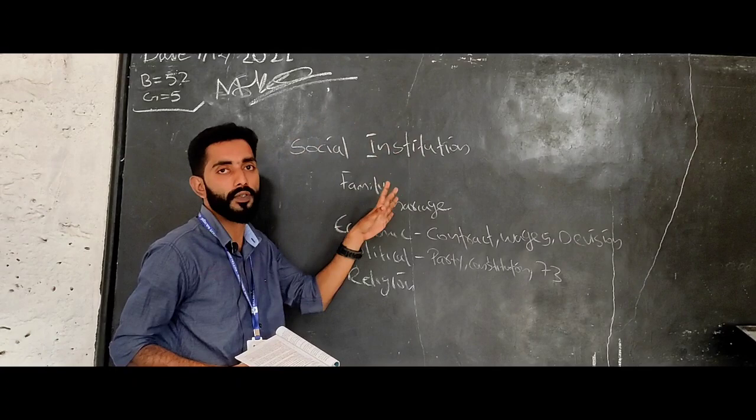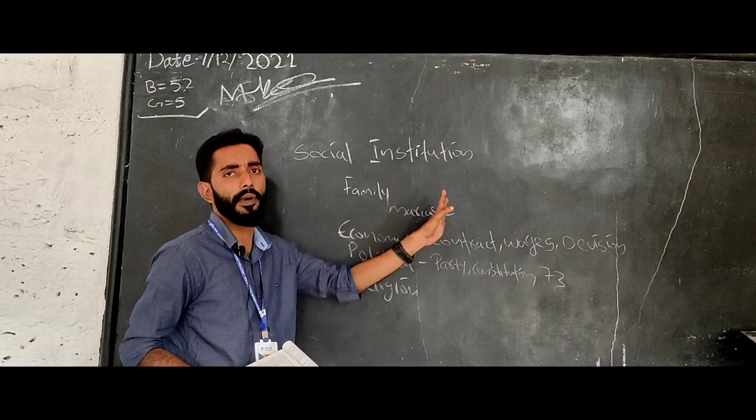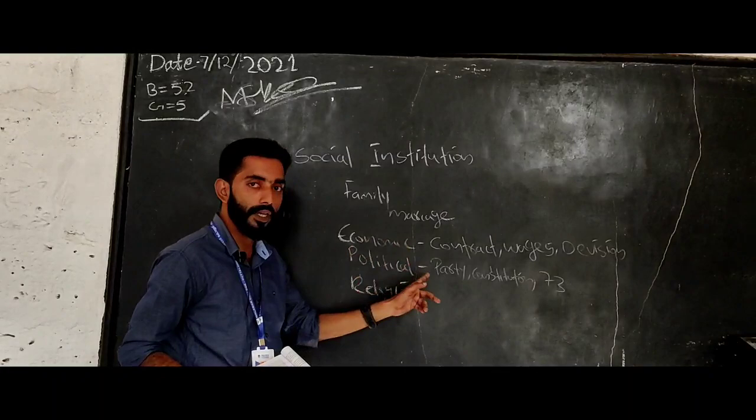The first part is the family. That is, the family is the first social institution of the human being. The economic, political and religious are the other institutions.